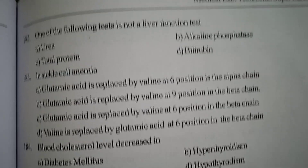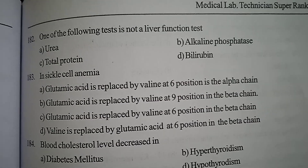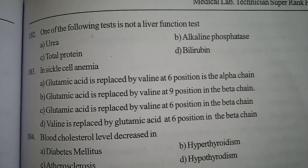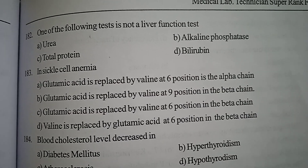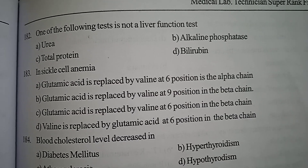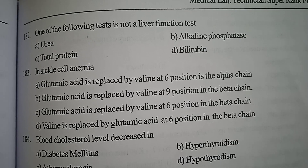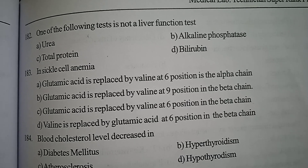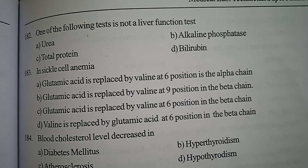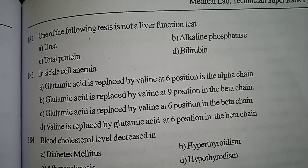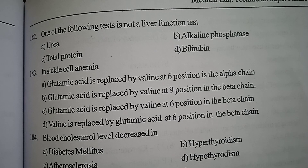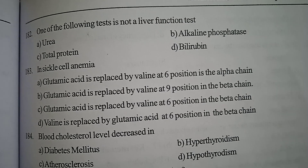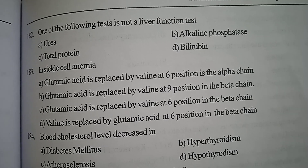Let's start. First one. One of the following tests is not a liver function test. Option A: Urea. Option B: Alkaline Phosphatase. Option C: Total Protein. Option D: Bilirubin.